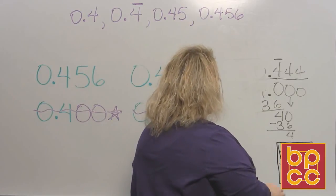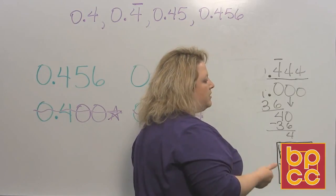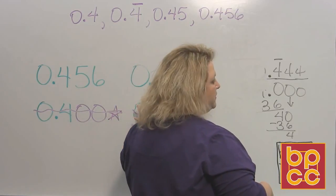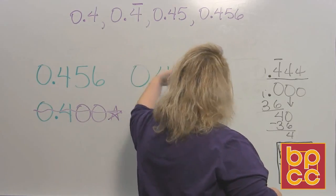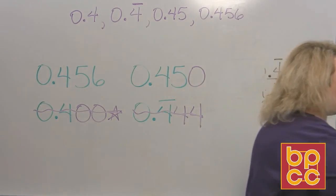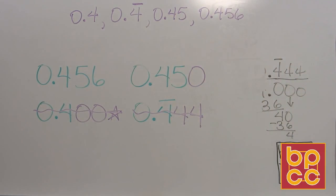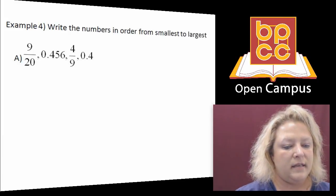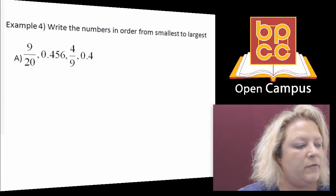So when you're putting them in order, number one, turn your fractions to decimals. Number two, make sure they have the same number of digits behind the decimal, and then put them in order from smallest to largest. So that's all we have for this lesson, and I will see you back for another one soon.